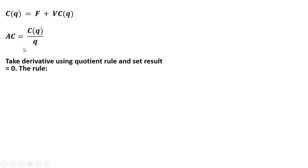So what we're going to do, we're going to find the minimum of average cost, and so we're going to take the derivative using the quotient rule, the derivative of average cost with respect to quantity, and we're going to set that derivative result equal to zero.